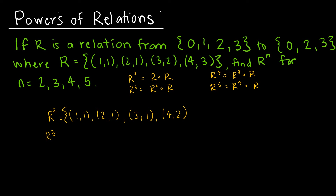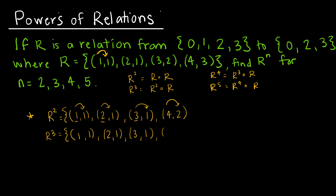To find R³, I'm composing R² with R. Starting with (1,1): 1 maps to 1, and 1 maps to 1, so (1,1) is a point. (2,1): 2 maps to 1, and 1 maps to 1, so (2,1) is a point. (3,1): 3 maps to 1, and 1 maps to 1. Then (4,2): 4 maps to 2 and 2 maps to 1, so (4,1). So R³ = {(1,1), (2,1), (3,1), (4,1)}.